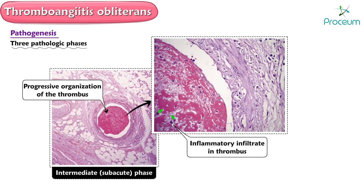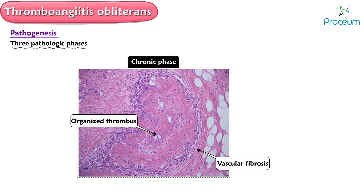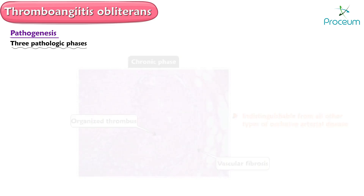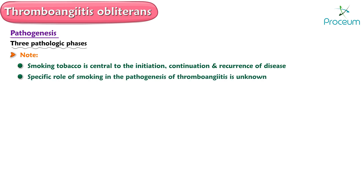A prominent inflammatory infiltrate is still present within the thrombus but is less in the vessel wall. In the chronic phase, inflammation is no longer present and only organized thrombus and vascular fibrosis remain. The pathological appearance in the chronic phase is indistinguishable from all other types of occlusive arterial disease. Although tobacco smoking is central to the initiation, continuation, and recurrence of disease, the specific role of smoking in the pathogenesis of thromboangiitis is unknown.